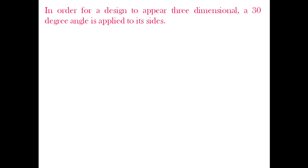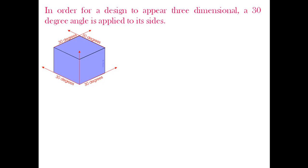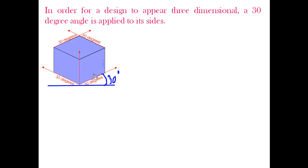That is the beauty of isometric drawing — it makes your object viewable in pictorial form. In order for a design to appear three-dimensional, a 30-degree angle is applied to its sides. Looking at this block object, the angle from the junction down to the horizontal line is 30 degrees. An isometric drawing is projected at an angle of 30 degrees to its horizontal plane, so as to make it look pictorial.